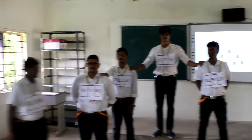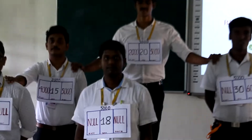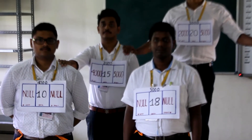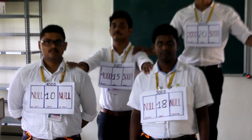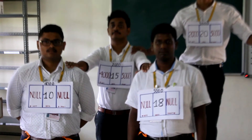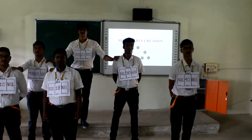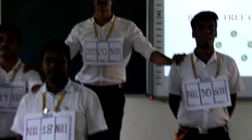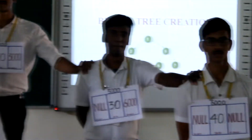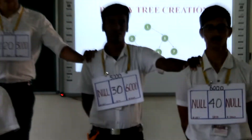Enter the element 18. The element 18 is smaller compared to root node 20 but greater than element 15, so it is placed on the right side of element 15 and the right pointer of element 15 points to element 18. Enter the element 40. The element 40 is greater than root node 20 and it is placed on the right side of node 30, and the right pointer of element 30 points to element 40.